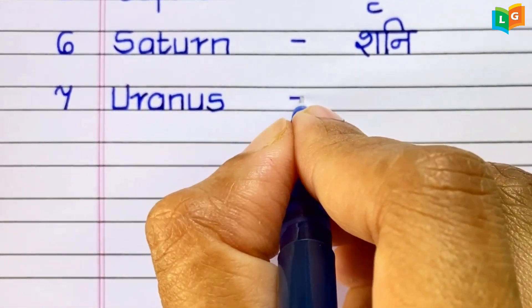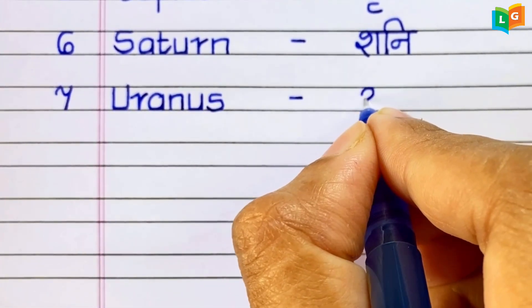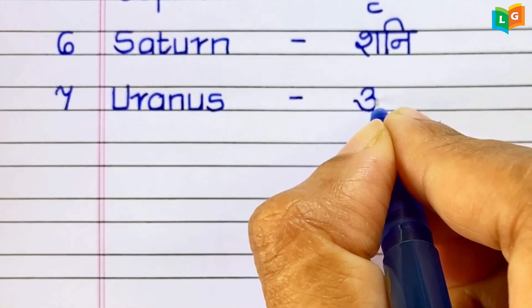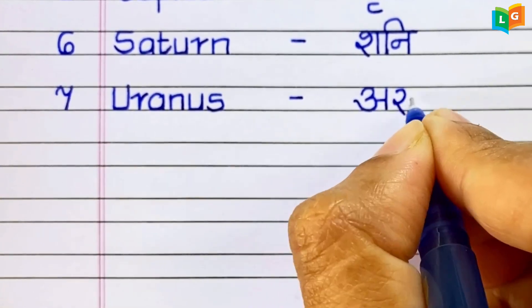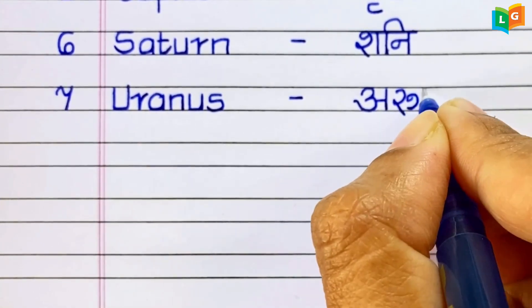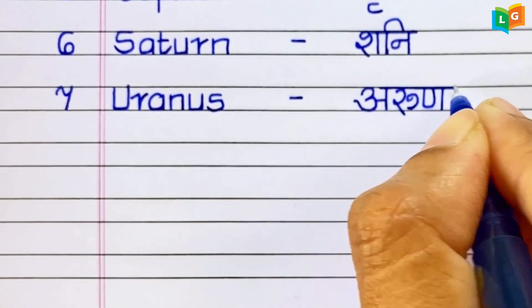U-R-A-N-U-S, Uranus. Uranus means Arun Graha.